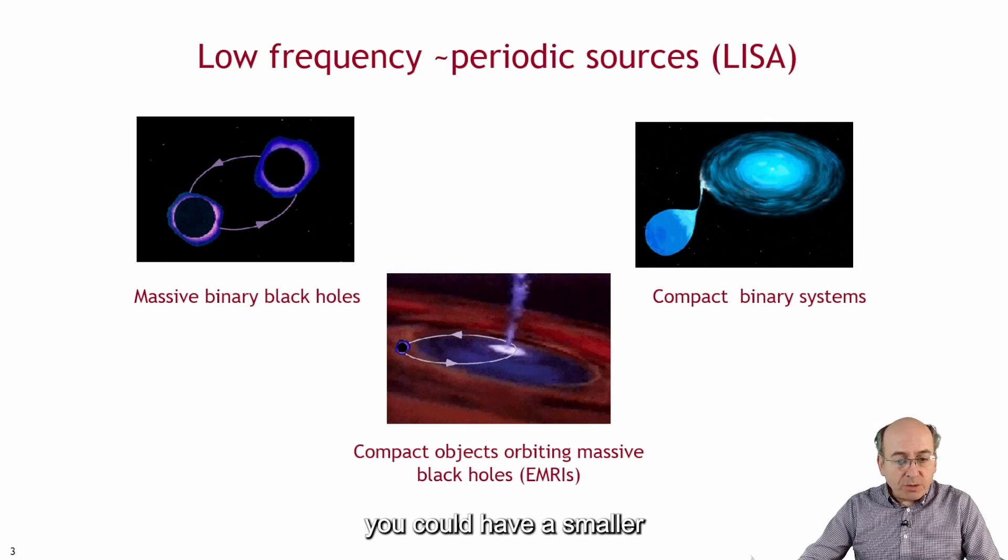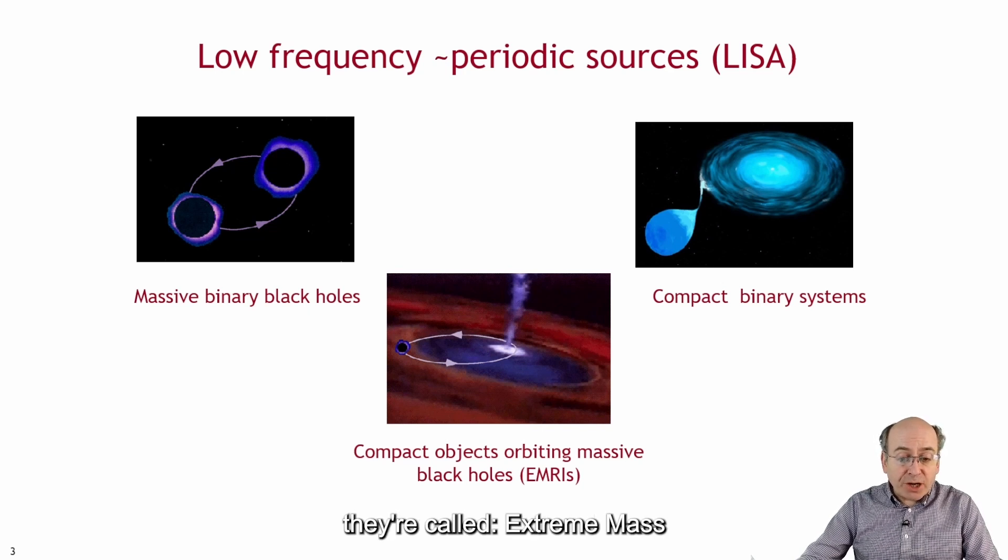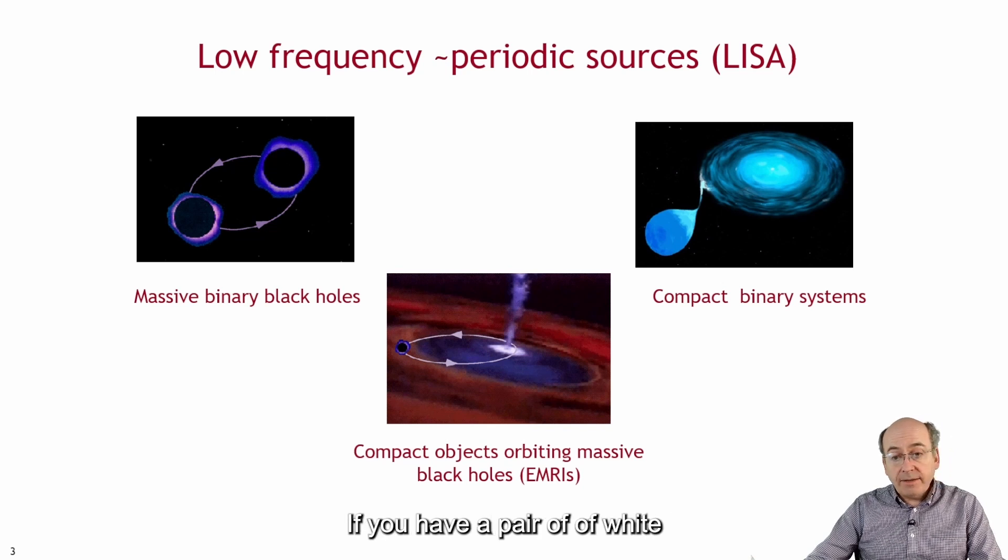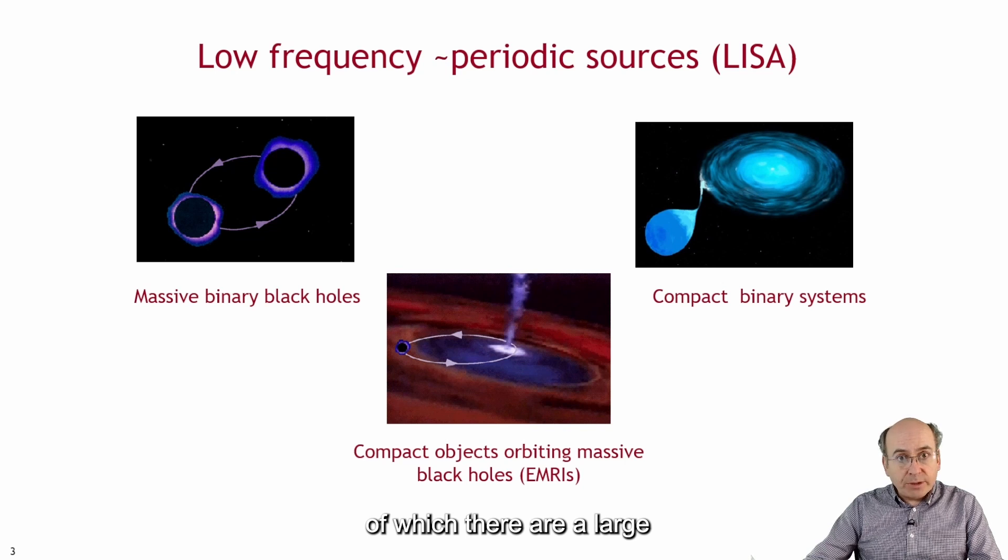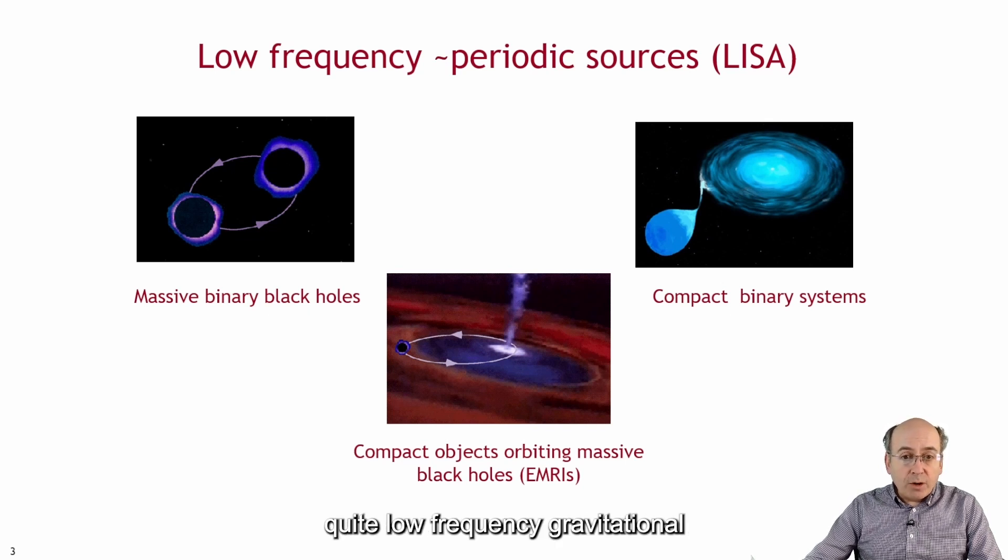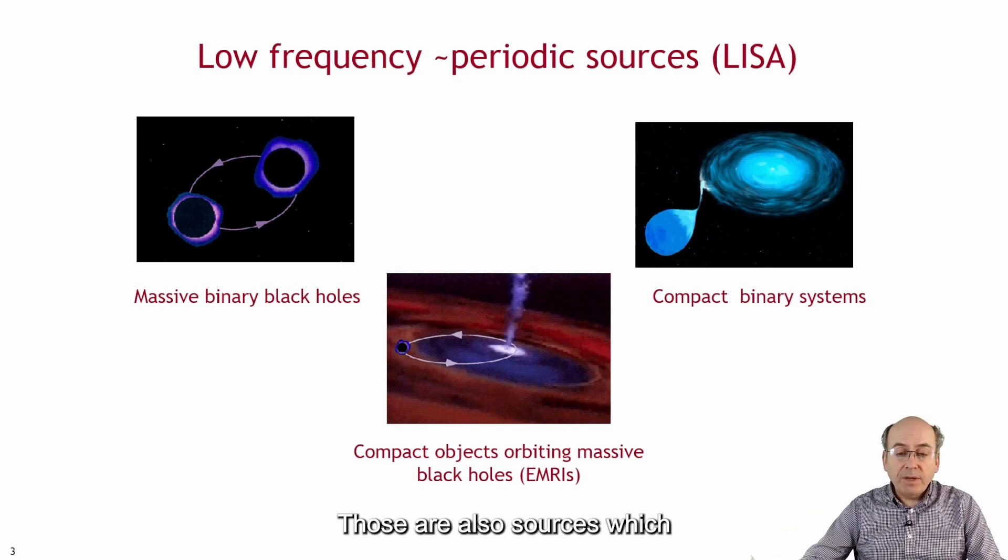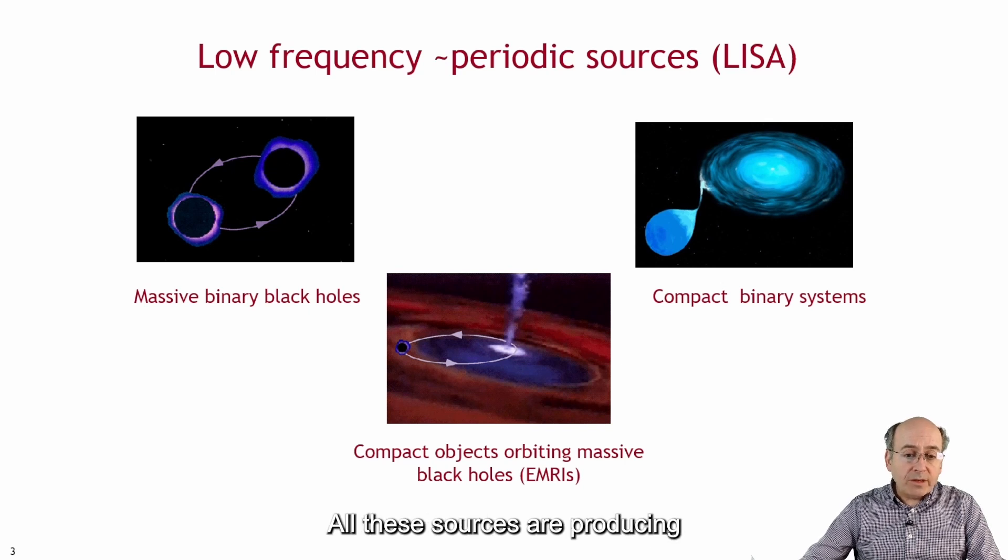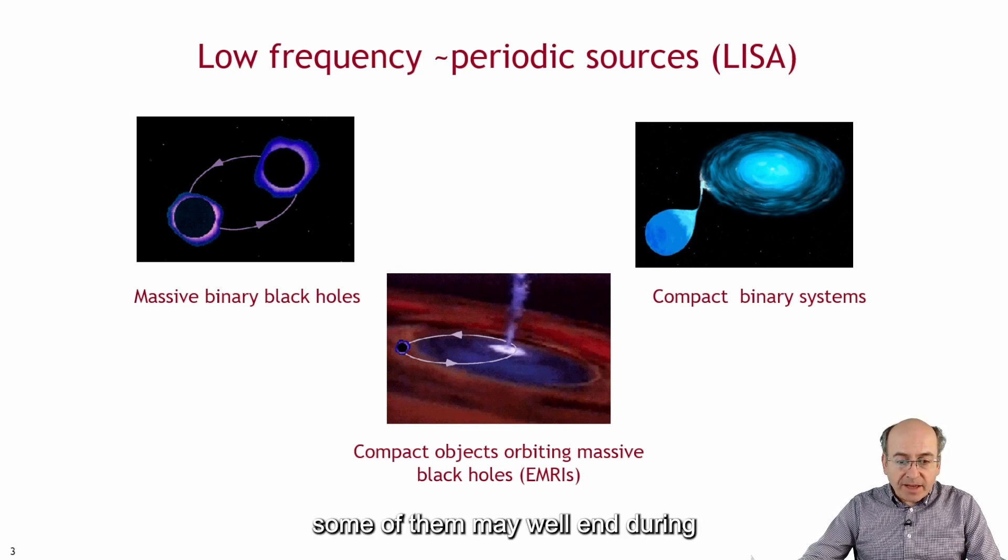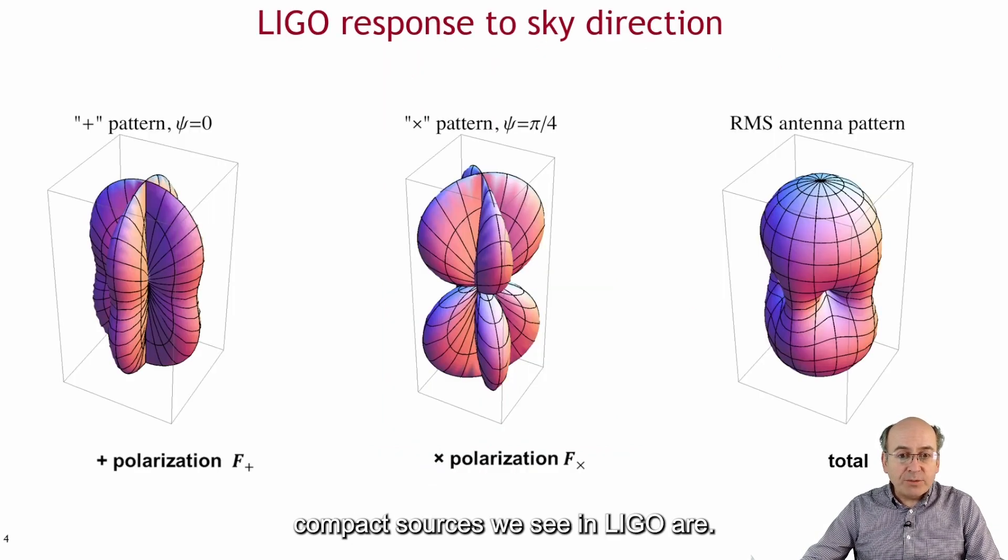As well as those rather spectacular systems you could have a smaller object, a compact object like a neutron star orbiting a supermassive black hole. EMRIs they're called, extreme mass ratio inspiraling sources. And another slightly more sedate example is in our galaxy if you have a pair of white dwarfs orbiting each other of which there are a large number because we can see them. They will produce gravitational waves at twice the orbital frequency. All these sources are producing signals which will last for about as long as the instrument. Some of them may well end during the lifetime of the instrument but they certainly aren't things which are transient in the same way as the compact sources we see in LIGO are.